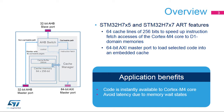The ART, or Adaptive Real-Time Accelerator block, speeds up instruction fetch accesses of the Cortex-M4 core to D1 domain internal memories: Flash A memory, Flash B memory, and AXIS RAM.